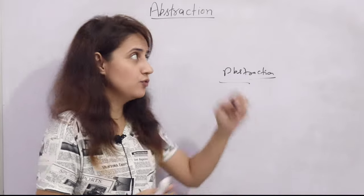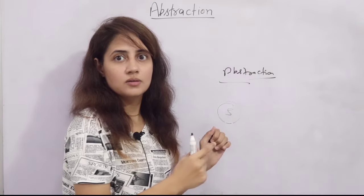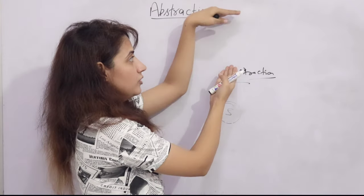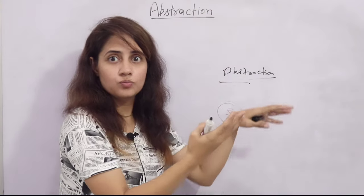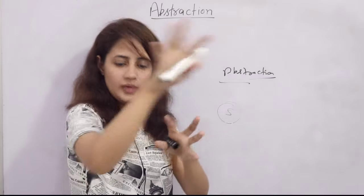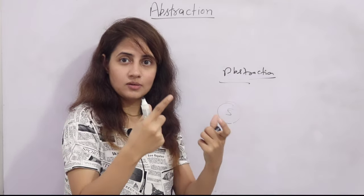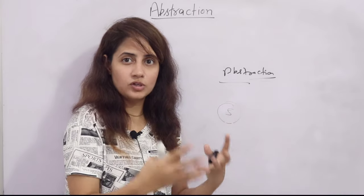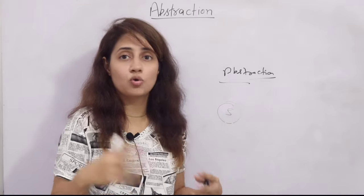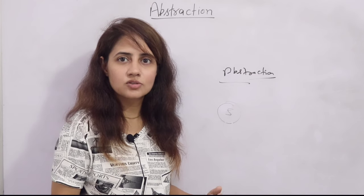If you have seen a research paper, at the beginning there is an abstract section. That paragraph tells you an abstraction of the paper — just the main ideas, what the research paper is all about, what they are going to discuss. So that is abstraction.